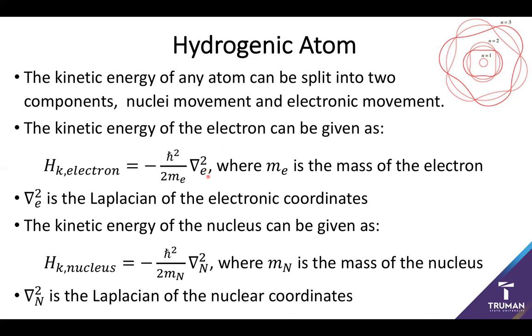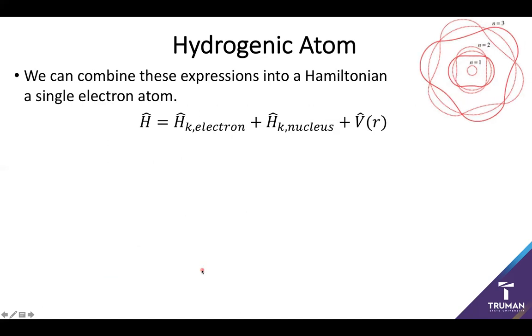In addition to this, we also have the kinetic energy of the nucleus, which will be addressed with a very similar Hamiltonian, where instead we're looking at the mass of the nucleus and the Laplacian of the nuclear coordinates. This gives us three components to our Hamiltonian: the kinetic energy of the electrons, kinetic energy of the nucleus, and the potential well that the nucleus generates for the electrons. It's going to try and pull these electrons in while the kinetic energy is going to want the electrons to keep moving.